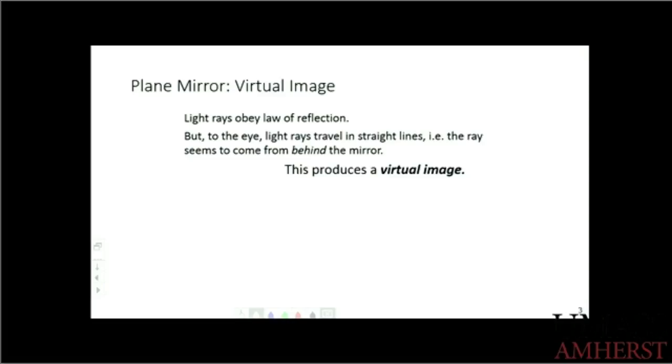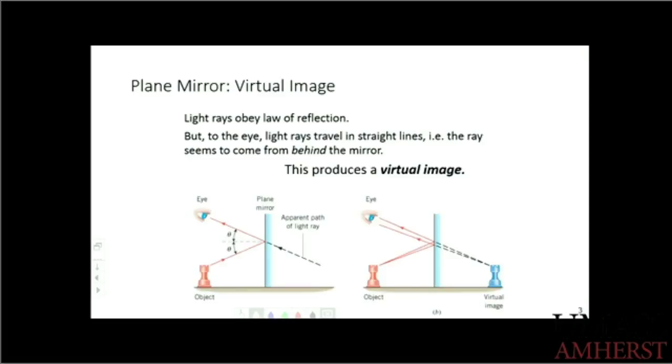As we said last time, this is a virtual image because the light rays are bouncing off and entering your eyes, and your eyes think the rays are traveling in straight lines and are coming from the source which is behind the mirror. But of course, there's nothing behind the mirror. Your eye just tells you there's something behind the mirror. What you see is called a virtual image, and that's where light rays appear to emanate from.